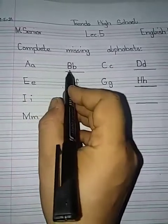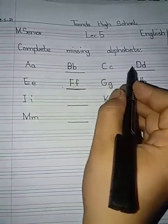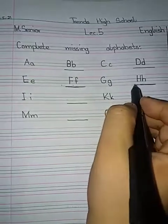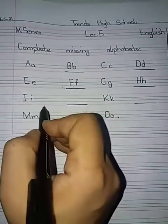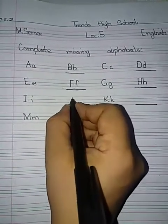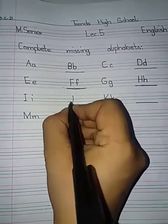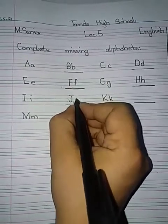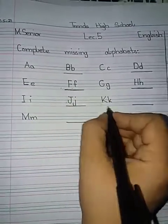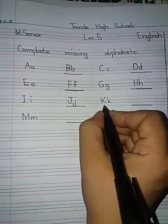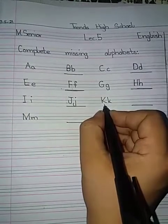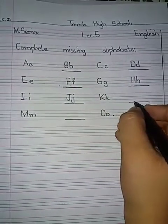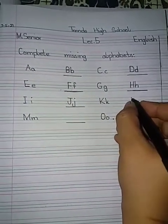A, B, C, D, E, F, G, H, I, J. What comes after J? K. J ke baad kya hota hai? K. What comes after K? L.